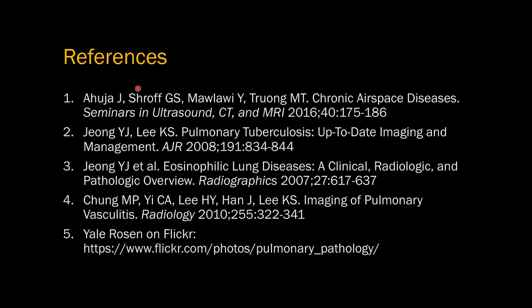References include a good article on chronic airspace disease — note there's also a separate differential for chronic ground glass opacity. Other references cover pulmonary TB, eosinophilic lung diseases including chronic eosinophilic pneumonia, and a comprehensive article on pulmonary vasculitis. Pathology images are from Dr. Yale Rosen, a pulmonary pathologist with a large image collection on Flickr with captioned descriptions. Feel free to leave any questions in the comments.